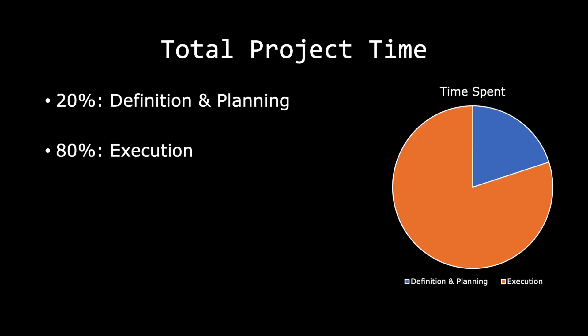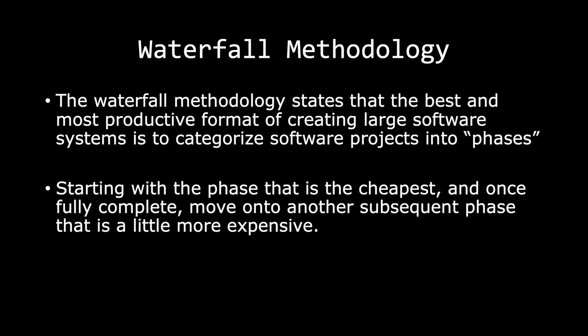There is no set rule on how much time should be spent on which phase of the project lifecycle, however most people generally agree that 20% of your total project time should be dedicated to the definition and planning phase, and the other 80% should be dedicated to the execution phase, which includes creating and testing your product. One type of project management methodology is the waterfall methodology, which was written and theorized in the 1970s and popularized in the 1980s and 1990s. The waterfall methodology states that the best and most productive format for creating large software systems is to categorize software projects into phases, starting with the phase that is cheapest to produce, and once fully complete, move on to another subsequent phase that is a little more expensive.